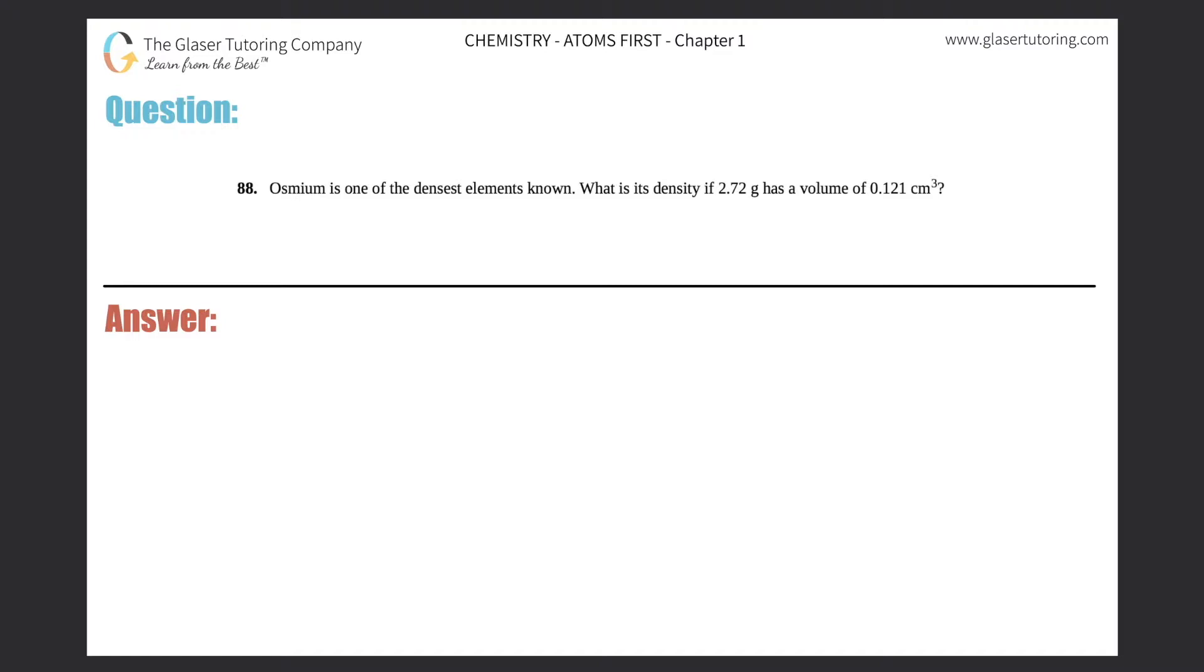Number 88. Osmium is one of the densest elements known. What is its density if 2.72 grams has a volume of 0.121 centimeters cubed?